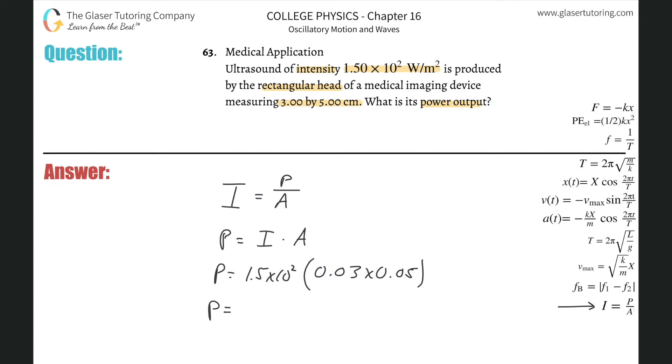Just multiply it all together: 1.5 × 10² times 0.03 times 0.05. We get a value of about 0.225, and that will be in terms of watts.